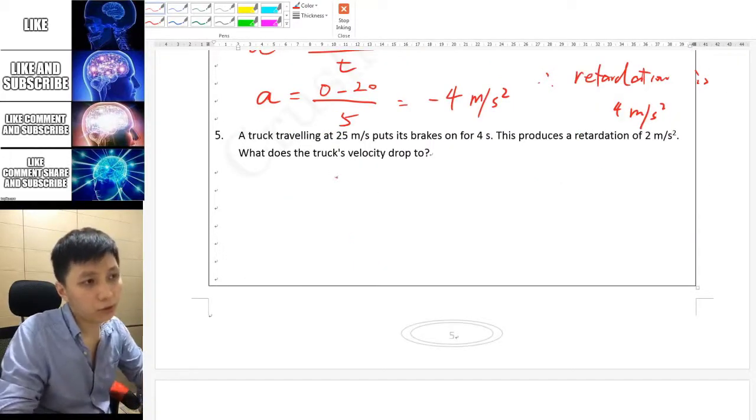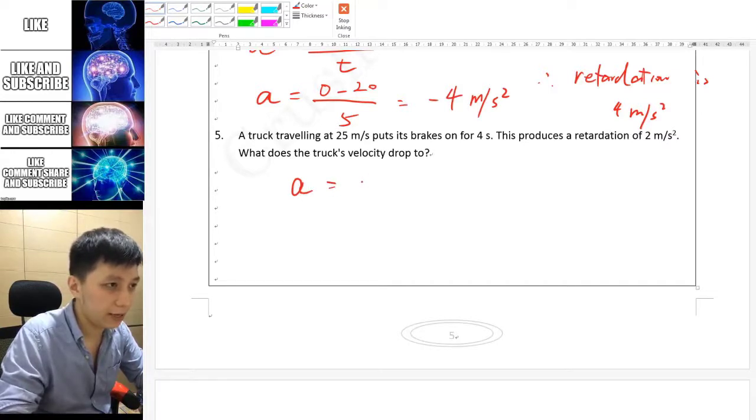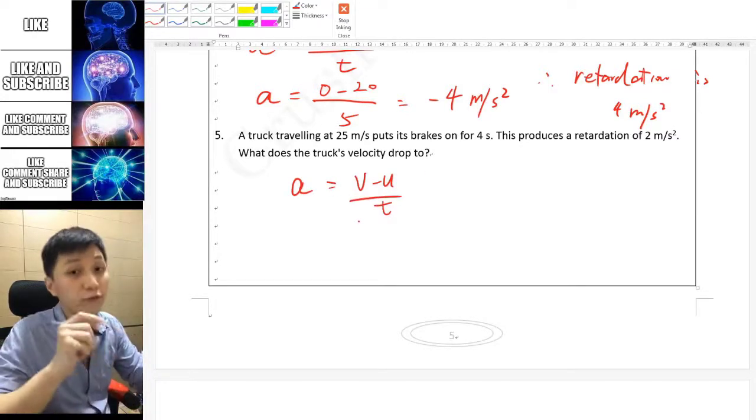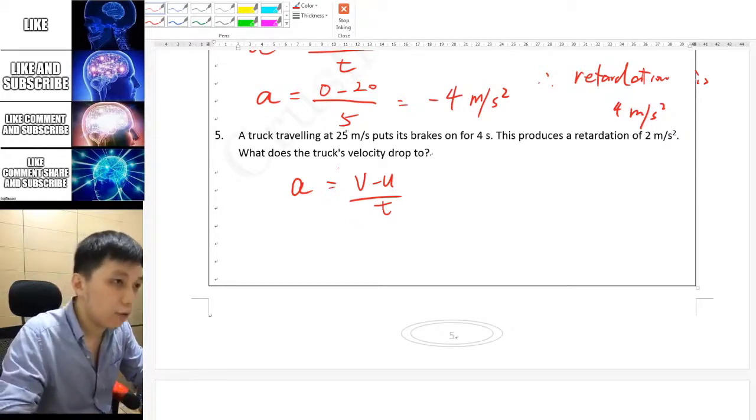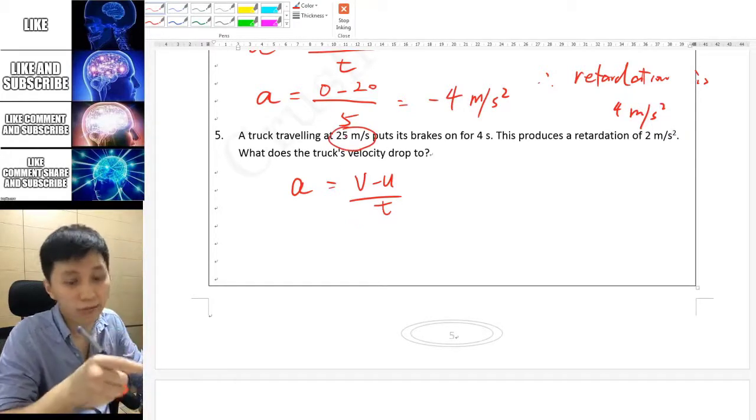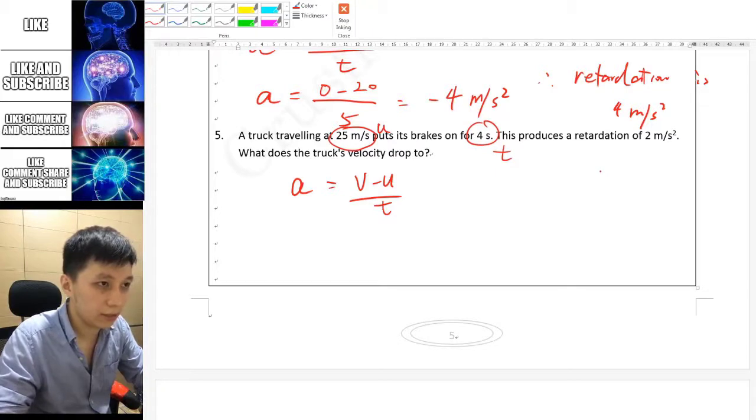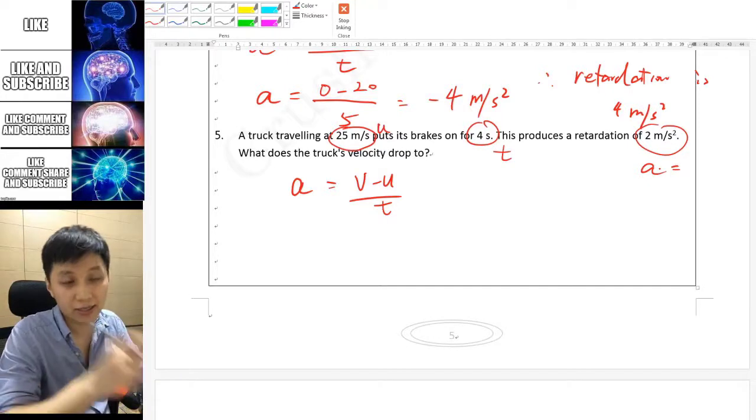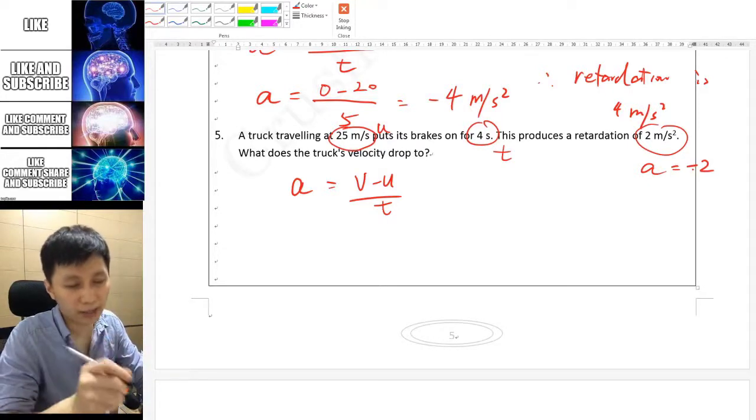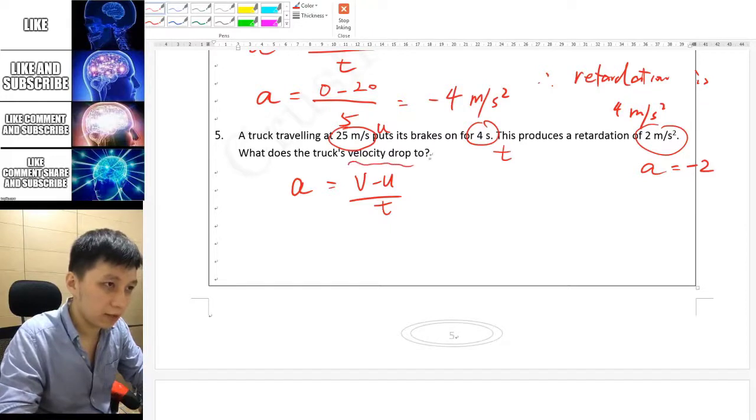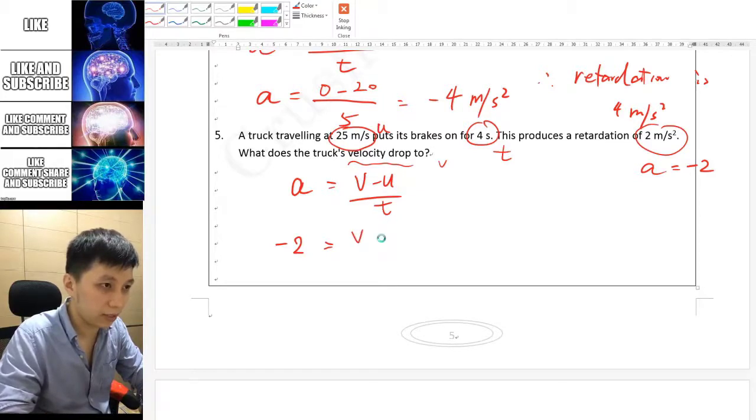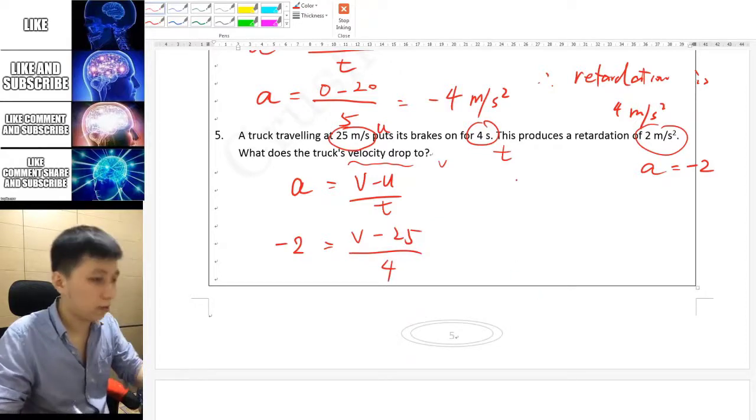Number 5 is also using the equation, so let's start directly: a equals v minus u over t. Every time you have to put down this equation and memorize it. For 25 I also recommend you to put down this symbol next to the number. This one is referring to u, this is t obviously, and this is a. But then if you refer to acceleration, it should be negative 2. So I'll remind myself this is negative 2 and you want to find v obviously.